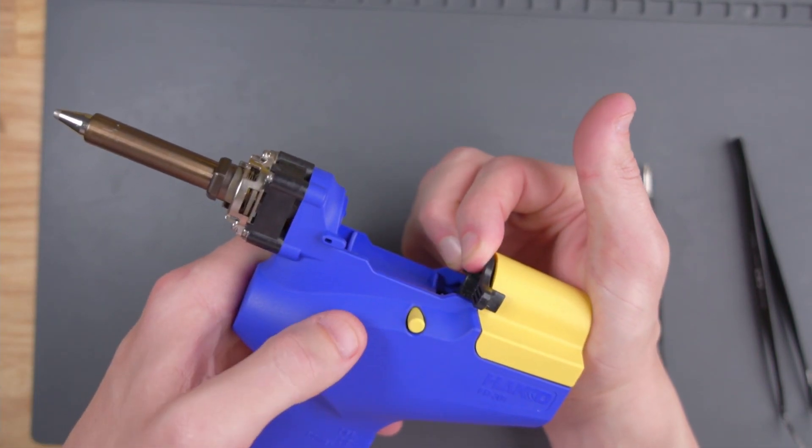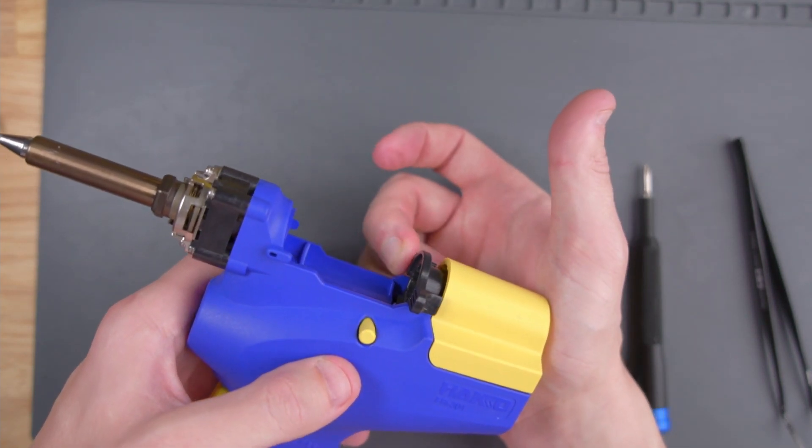Something must be wrong. When I pull this black piece back, this button should pop out and keep this black piece from springing forward again. Let me take this apart again and see what's wrong.